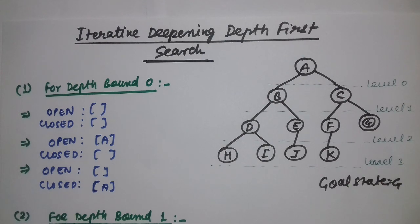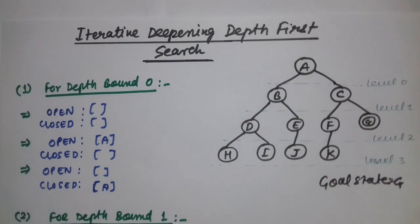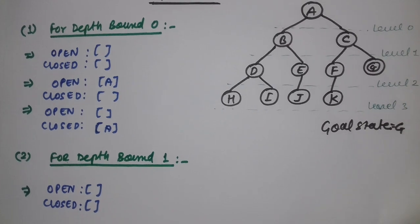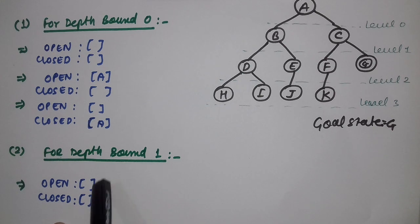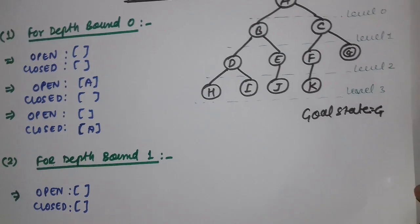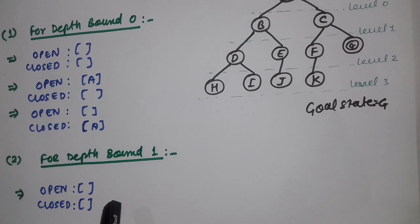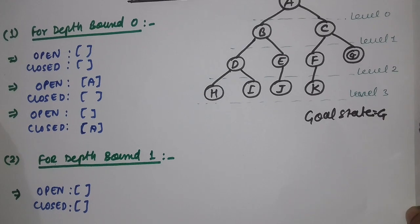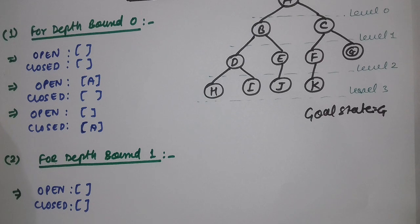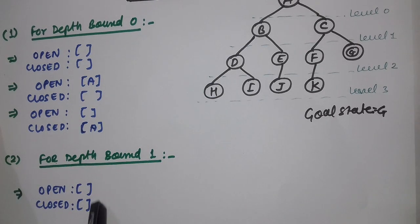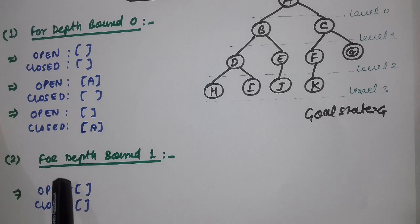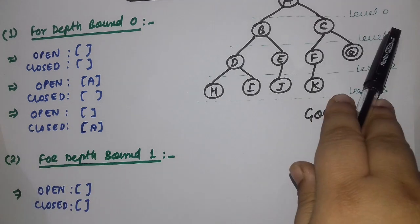Moving further — for depth bound 1 we again start from the beginning. In iterative deepening we have to show the iterations, so I have again written open and closed as empty, because each iteration starts from 0. Now we are going for depth bound 1, meaning we have to traverse till level 1.